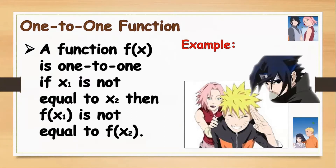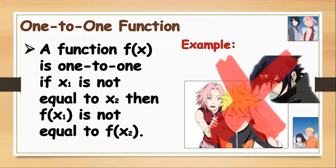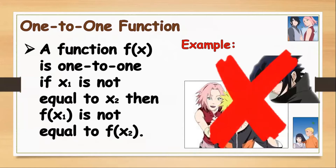Because we have already paired Sakura with Sasuke, and Hinata with Naruto, they can never pair with the other one's partner. So this cannot be considered a one-to-one function if they pair with the other one. I hope you understand that.